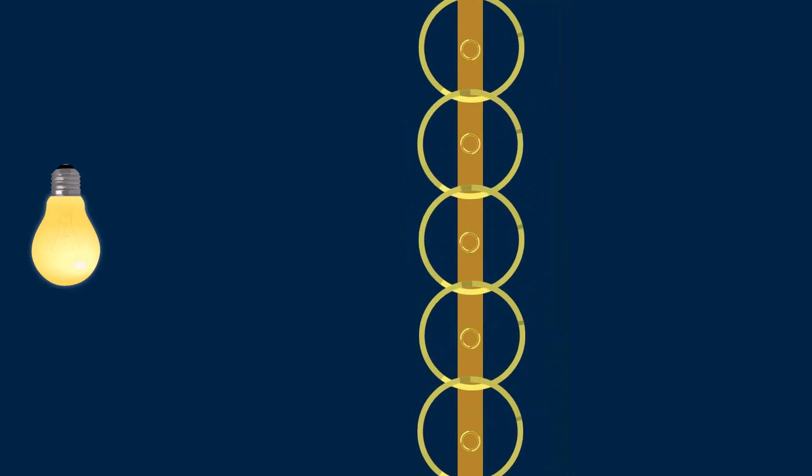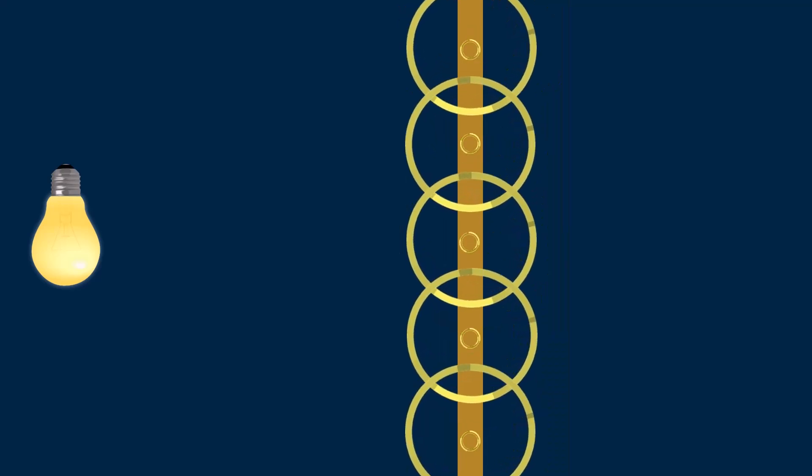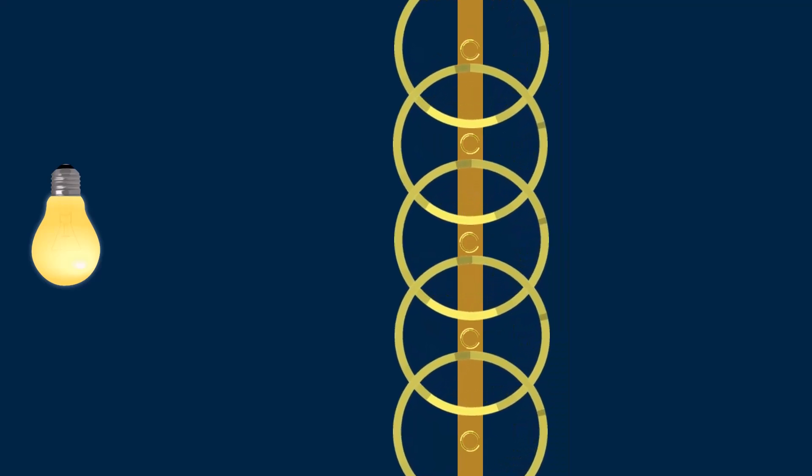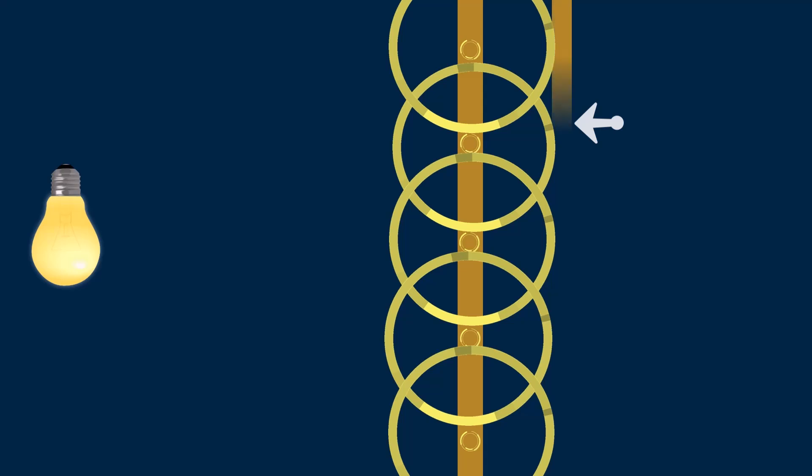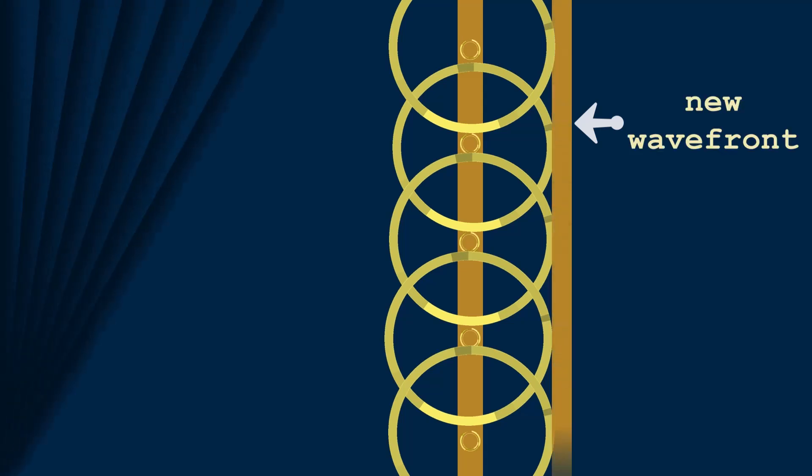This method works for any shape of wavefront. Sources of wavelets always produce spherical wavelets, and the common tangent will be the new wavefront. In this way, Huygens' principle helps determine where the wave propagates and how it propagates.